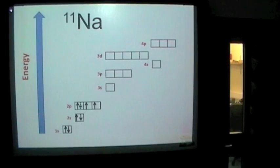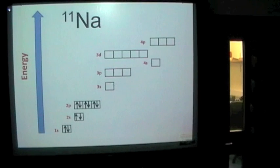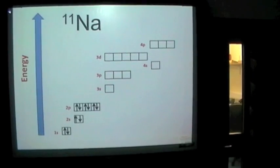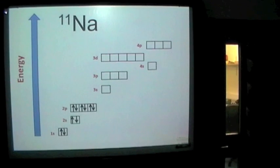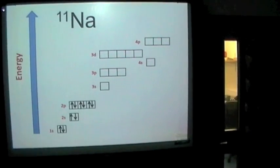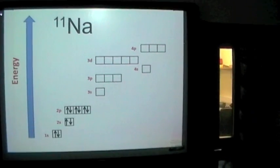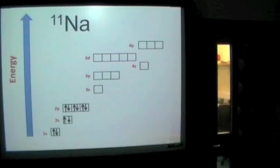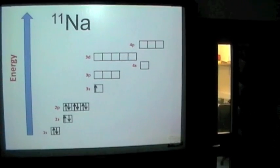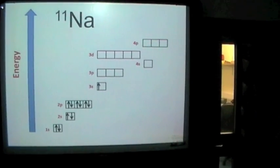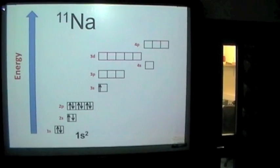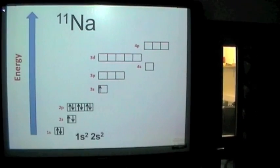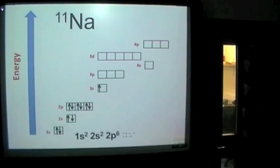So we've got how many left? We've got one electron left because there's 10 in at the moment. Where will that go? Well it's just going to go in the next available subshell, and so it goes into the 3s subshell. So we write that as 1s2, 2s2, 2p6, 3s1.